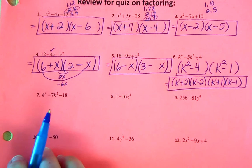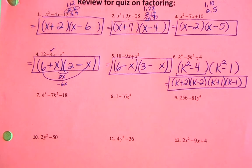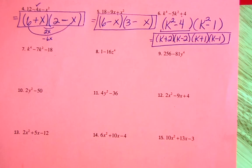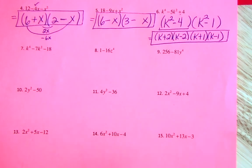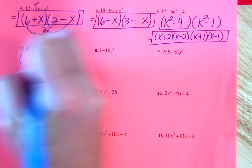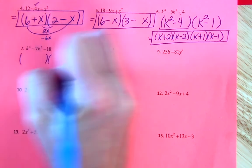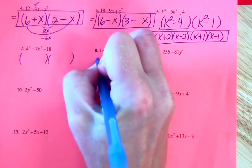Next row — let's look for a GCF. I do not see one, so let's set up our two parentheses.